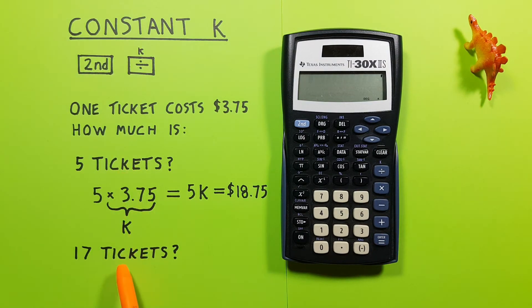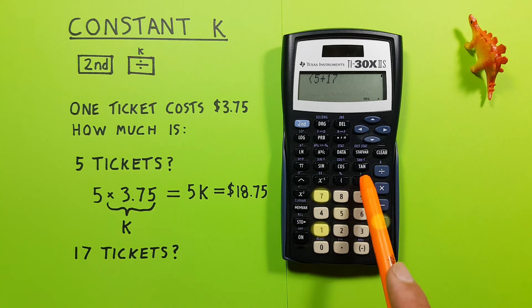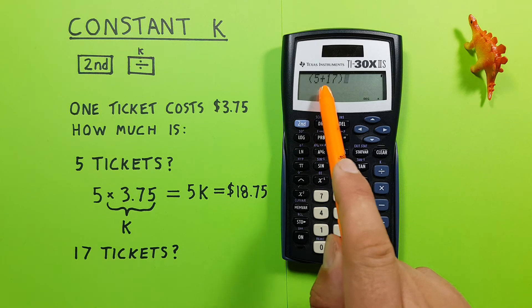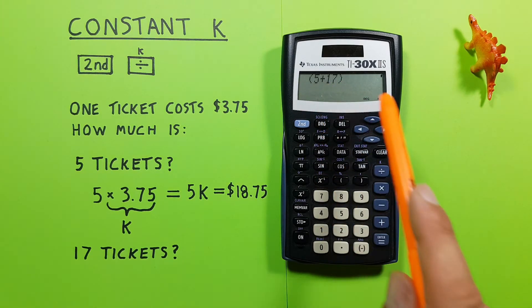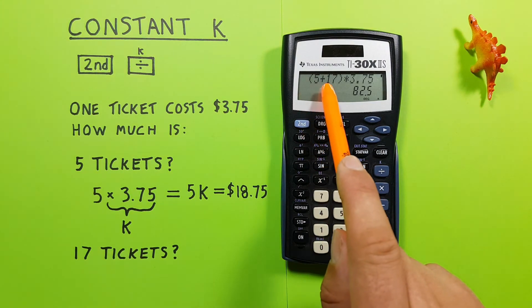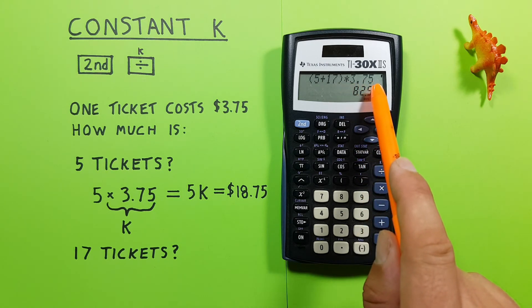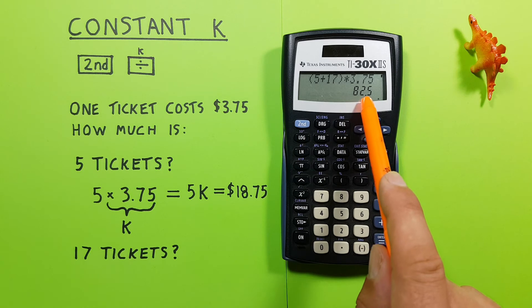But what if we want to buy both packages of tickets? Well, what we can do is put on our screen in brackets, five plus 17, and close our brackets. We need to use brackets because remember, our constant is just applied at the very end of whatever we put here, and press equals. And see, we get our five plus 17, and then times 3.75. So if we get both packages, it costs $82.50.